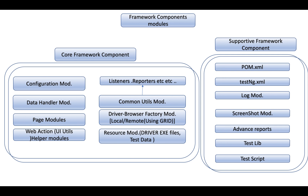For supporting framework components: when we create the Maven project, a pom.xml is automatically created and we'll add all necessary dependencies and JARs, including TestNG. We'll use a logger like Log4j for logging. There will be a screenshots folder, and for advanced reporting we'll use Extent Report — both Extent Report and TestNG report — and optionally XSLT report as well. There will also be test libraries and test scripts. As we develop, we'll learn more about each of these.